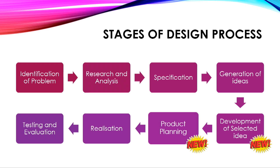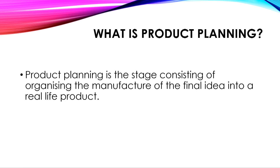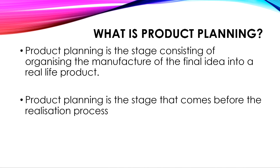Product planning is the sixth stage in the design process. Product planning is a stage consisting of organizing the manufacture of the final idea into a real-life product. Product planning is a stage that comes before the realization process.